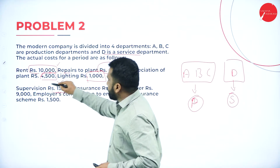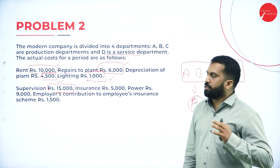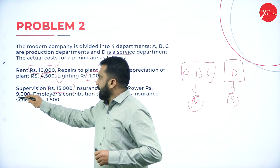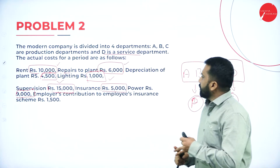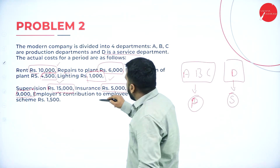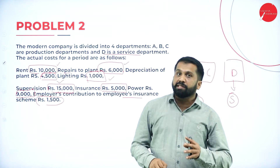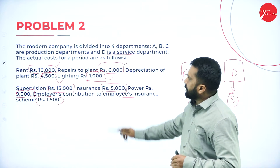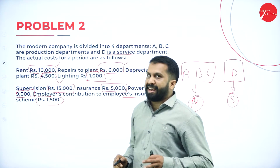Next, supervision charges are 15,000. Insurance is 5,000. Power rupees 9,000. That gives us three more expenses: supervision charges, insurance, and power charges. Then, employer's contribution to employee insurance scheme is 1,500. So in total, we have 8 expenses.